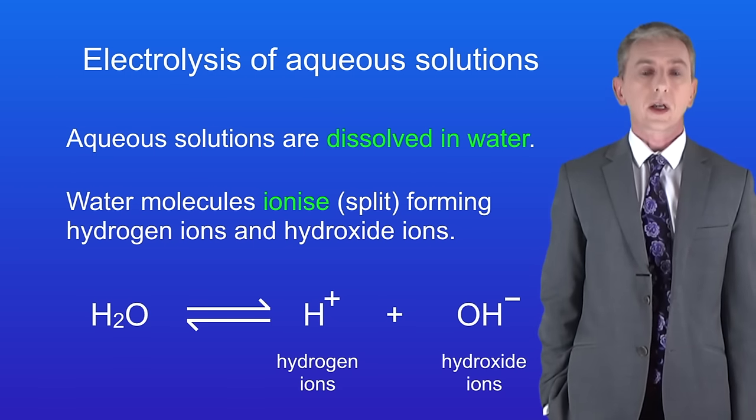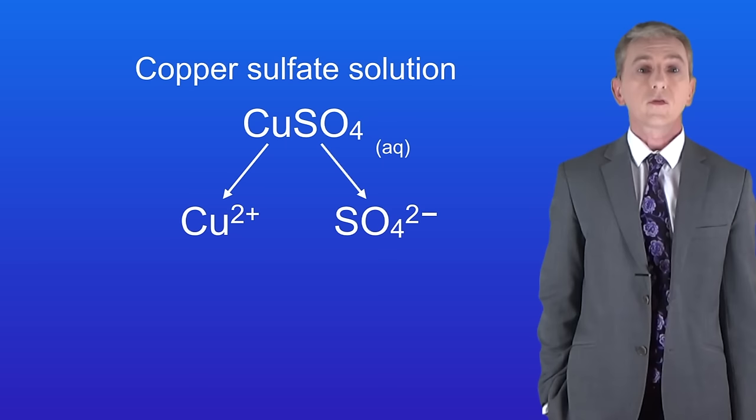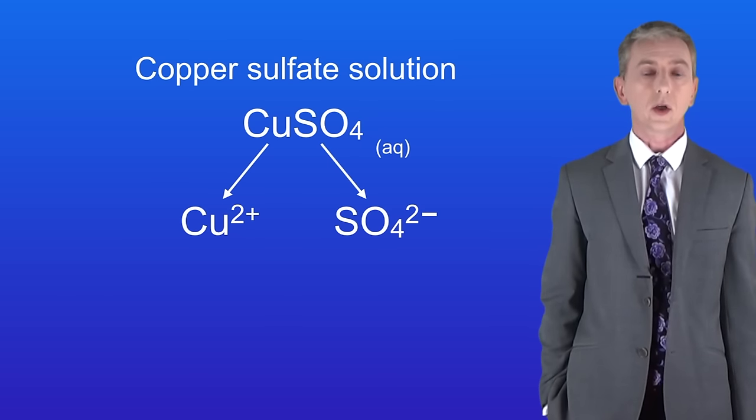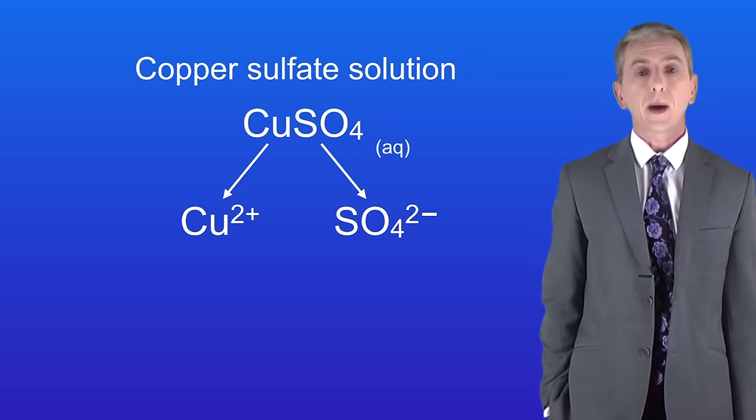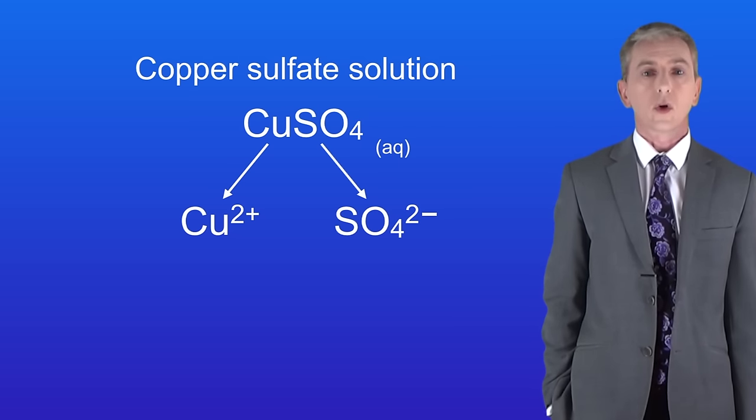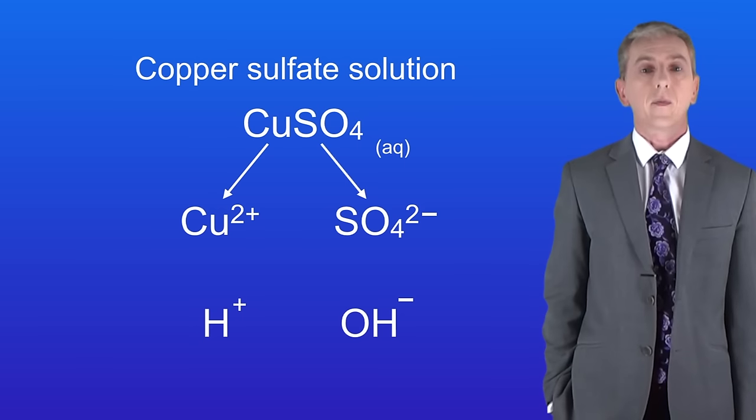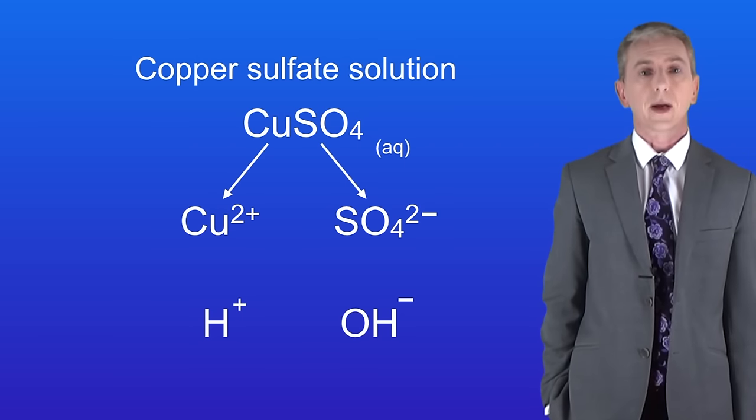We're going to start by looking at the electrolysis of copper sulfate solution. Copper sulfate solution has the formula CuSO4(aq). This contains the copper ion Cu2+ and the sulfate ion SO42-. Because it's dissolved in water we also need to consider the hydrogen ion H+ and the hydroxide ion OH-.